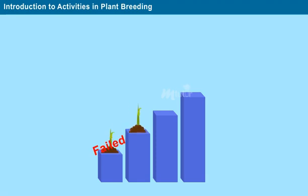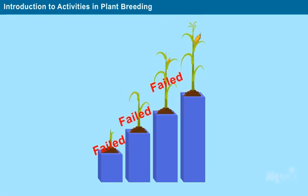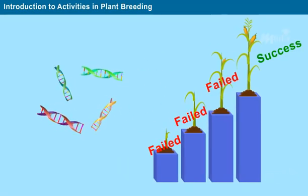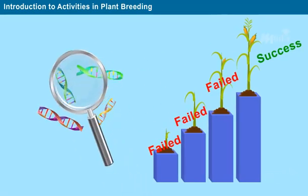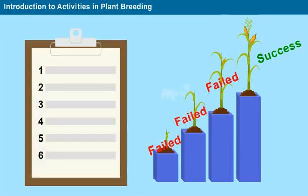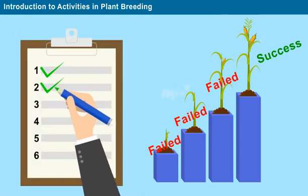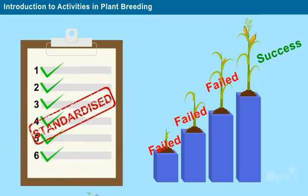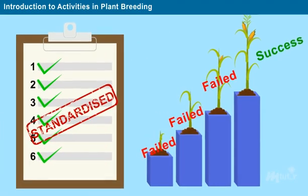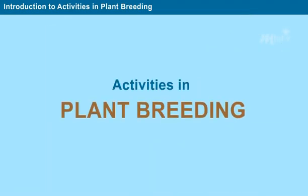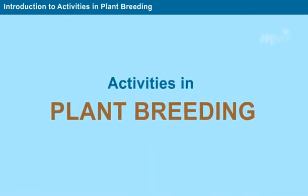The saying 'failure is the stepping stone for success' very well applies to plant breeding. Researchers wrestled with genes to identify the cause of the failure. After mixed endeavours, finally specific procedures in breeding techniques were standardised and followed for improved results. In this lesson, let us now discuss the activities involved in plant breeding.